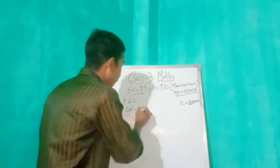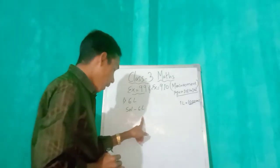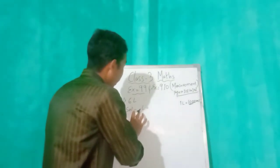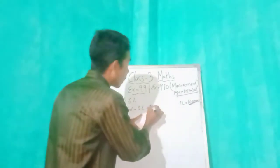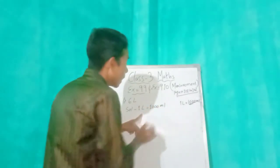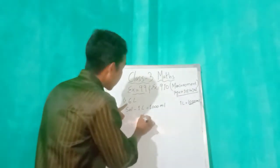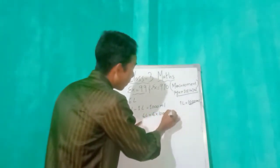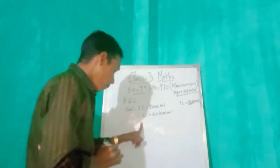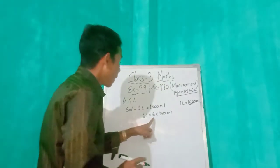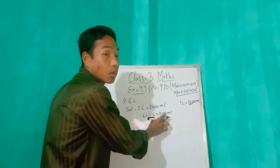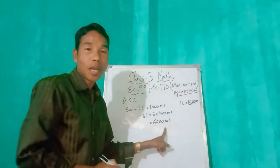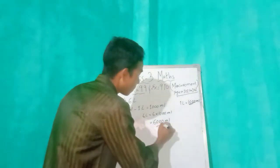Six L means six liters. Solution: one liter equals 1000 milliliters, so therefore six L equals six into 1000 milliliters. Six into 1000 is 6000, so the answer is 6000 milliliters. It is very easy!